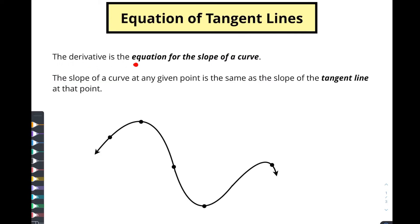We know that the derivative is the equation of the slope of a curve. So anytime we find the derivative of a function we're finding the equation for the slope of a curve — I can't stress that enough. We're finding the equation for the slope of the curve. And the slope of the curve at any given point is the same as the slope of the tangent line at that point.